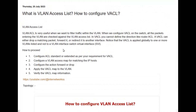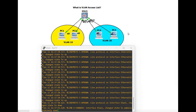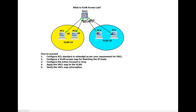A VACL can either drop a matching packet, forward it, or redirect it to another interface. In the topology we have one switch, four PCs, and two VLANs. To proceed: first configure the ACL (standard or extended), then configure the VLAN access map for matching the IP host and configure the action (forward or drop), apply the VACL map to the VLAN, and verify. Our task is to configure the VACL so that PC1 cannot communicate with any VLAN 20 PCs — PC1 cannot communicate with PC4 or PC3, but PC1 can communicate with PC2.